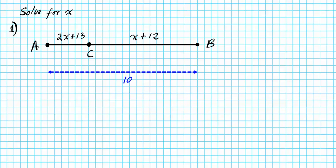The segment addition postulate basically states that if you have a segment AB with a point C somewhere within the segment, then AC plus CB is going to be equal to the length of the entire segment.